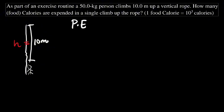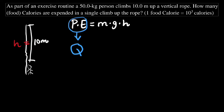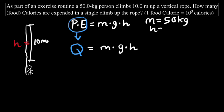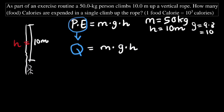To find the energy, we use potential energy because we have height and mass. In thermal physics we write Q = mgh. The mass is 50 kg, the height is 10 meters, and we take gravity as 10 m/s² to simplify.